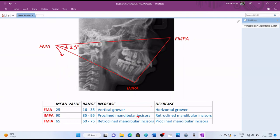Second angle is IMPA, indicating the position of the incisor on the mandibular plane. The average value is 90 degrees with the range from 85 to 95. Any increase in this angle will indicate a proclined mandibular incisor, while a decrease in this value would indicate a retroclined one.